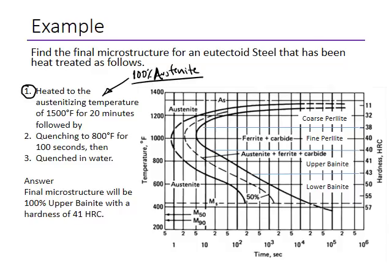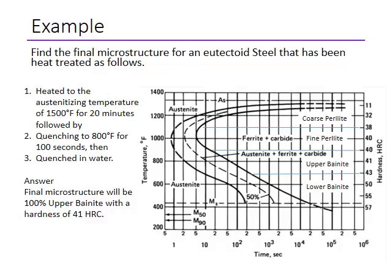When you are designing a heat treatment, you should always mention this first step. If asked to design a heat treatment using TTT diagrams on an exam, the first step is always heating to the austenizing temperature. State what that temperature is and the time you have to wait there. If you have no information about the thickness of the material, always use 20 minutes, or at least 15 minutes.